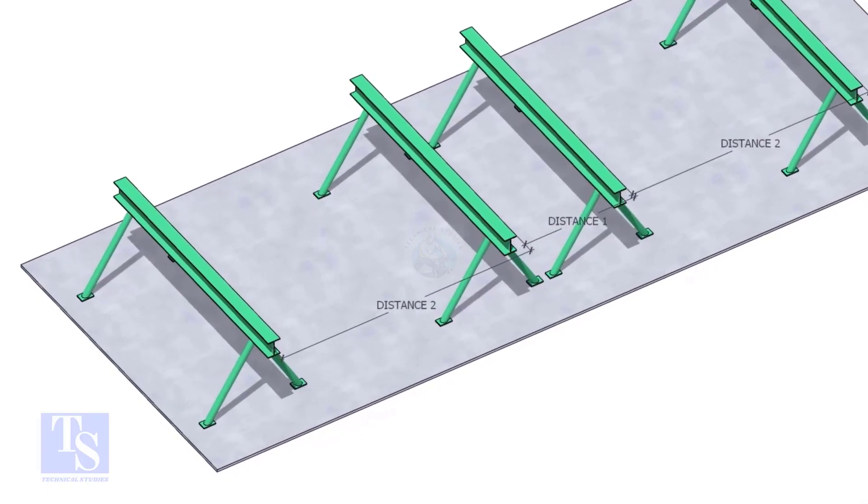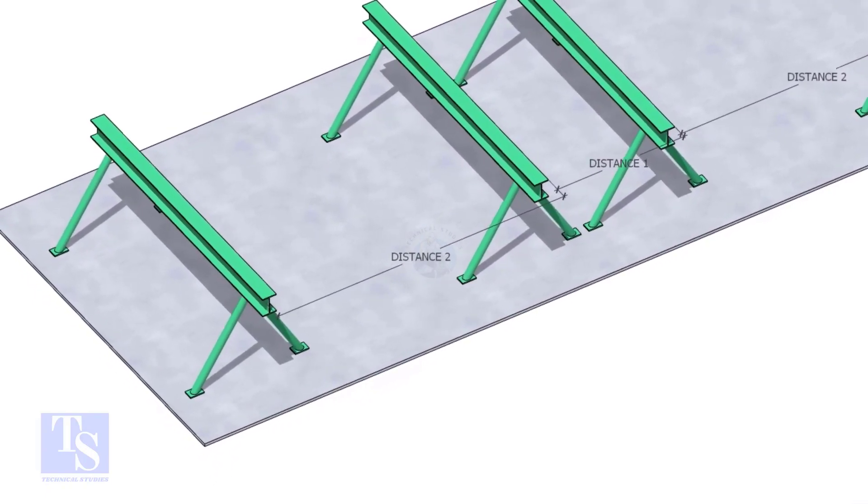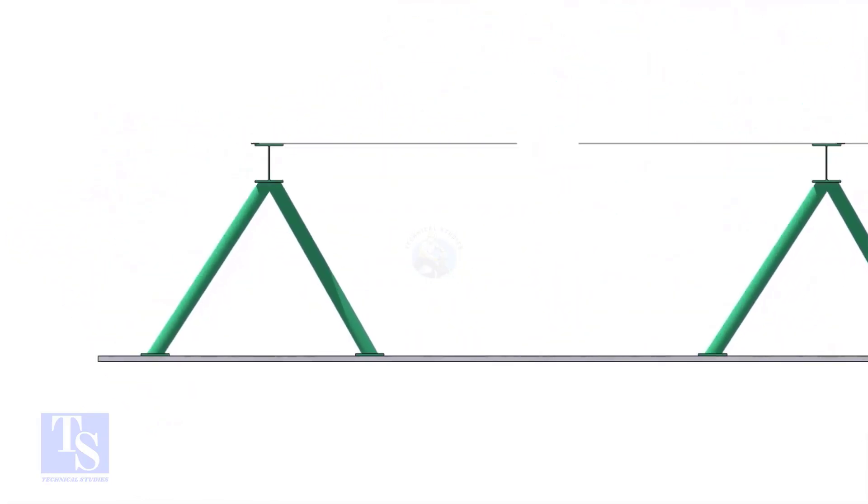Distance 1 shall be 1 meter to 1.2 meters. And distance 2 shall be 2 to 2.5 meters, less than the random pipe.